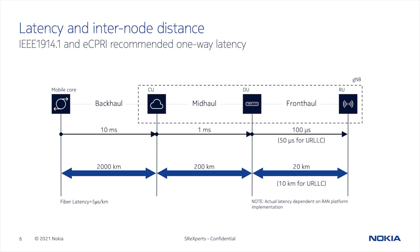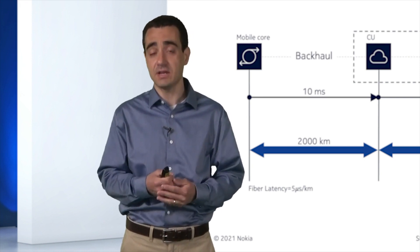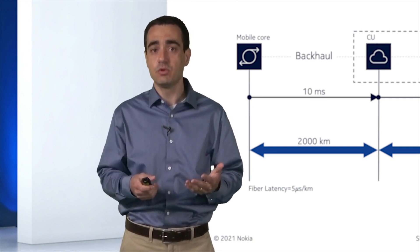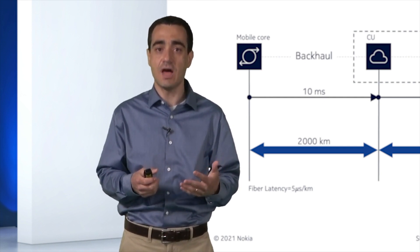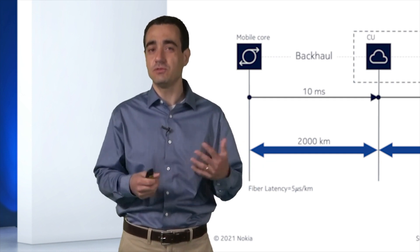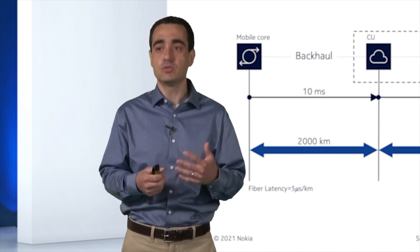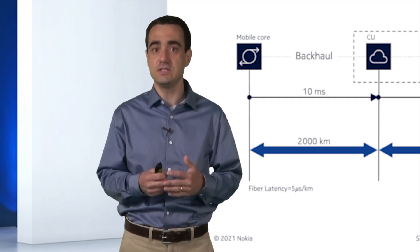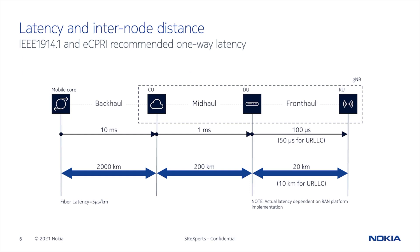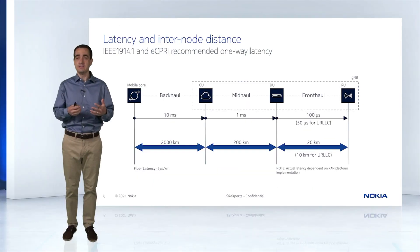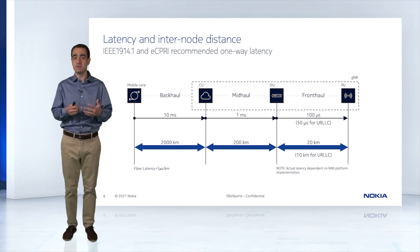The net effect of that latency limit is a distance limit as well. Routers will typically take around 10 microseconds to switch packets, and fiber would typically take about 5 microseconds per kilometer to transfer light. So if you do the math, we're really talking about 20 kilometers of distance between the DU and the RU. For bandwidth, backhaul is seeing a migration from 1 Gbps to 10 Gbps in general. For fronthaul specifically, we typically see at least 10 Gbps but very commonly 25 Gbps. Midhaul will typically be very similar to backhaul.